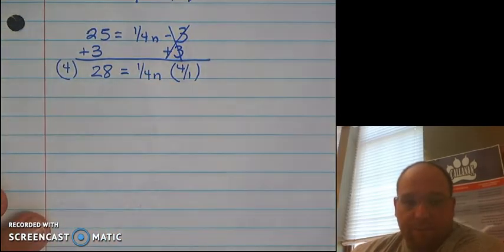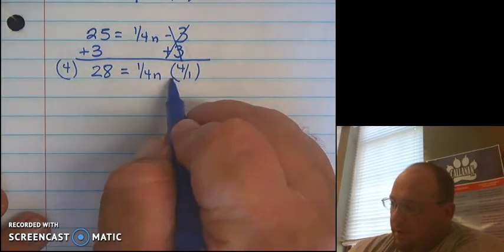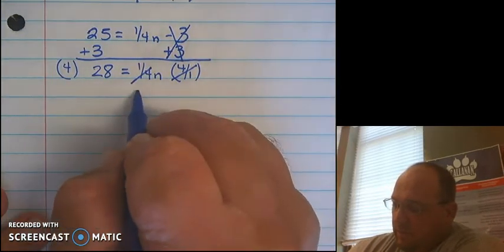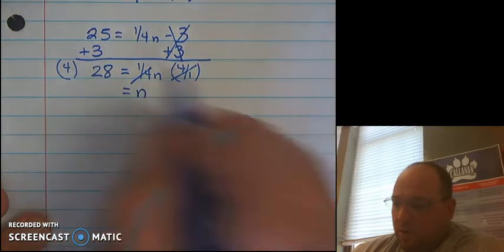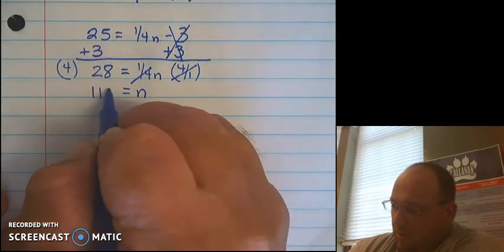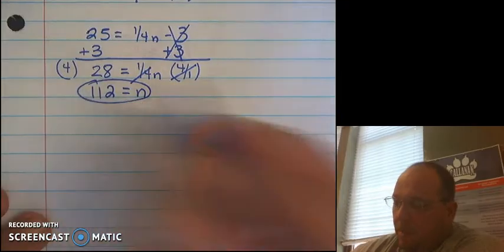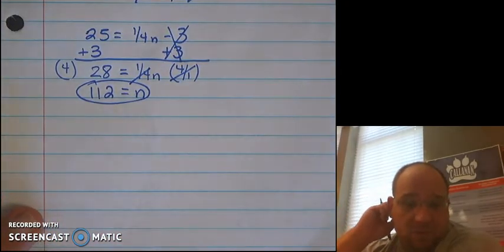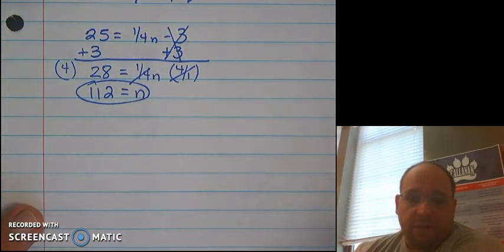This will cause this to cancel out. Leaves me with just n equals 4 times 28 is equal to 112. Again, I could double check that by substituting 112 back in for the variable of n.